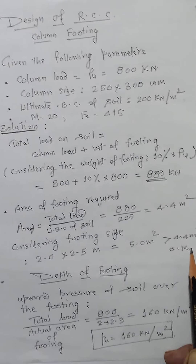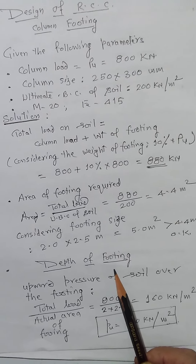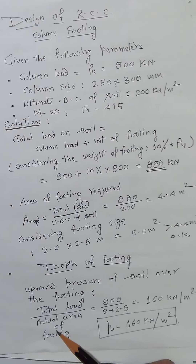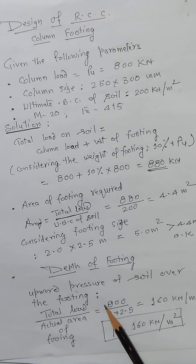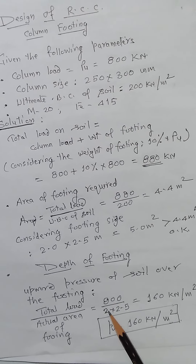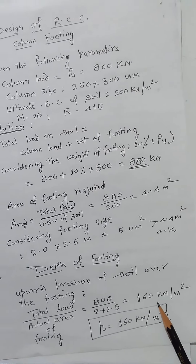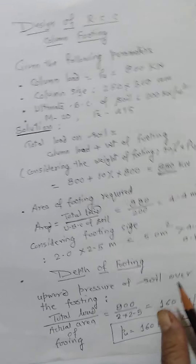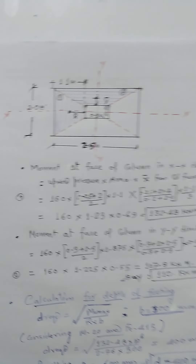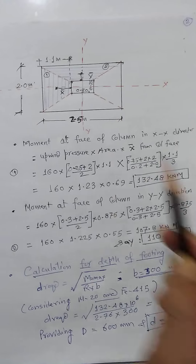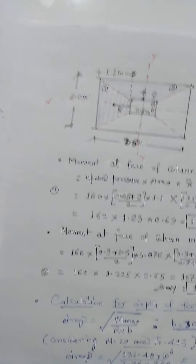Our area is sufficient. Now we have to find the depth of the footing. For finding the depth, first we have to calculate the upward pressure of the soil. The upward pressure is calculated using the column load only divided by the actual area. That is 800 divided by 2 x 2.5, which comes out to be 160 kN per meter square. So the upward pressure is 160 kN per meter square. Now we will go for the important part — the load dispersion in the XX direction as well as the YY direction.